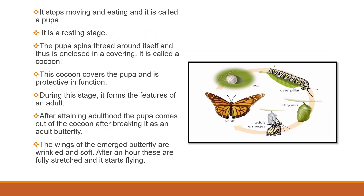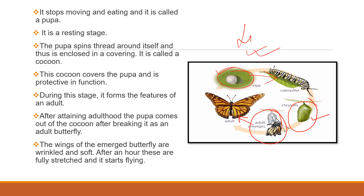Here you can see the life cycle diagram — the egg is on the leaves, which forms the caterpillar, then this forms the chrysalis. So: egg, larva, pupa, and from the pupa the adult butterfly grows. This is the life cycle diagram of the butterfly, and you should draw this.